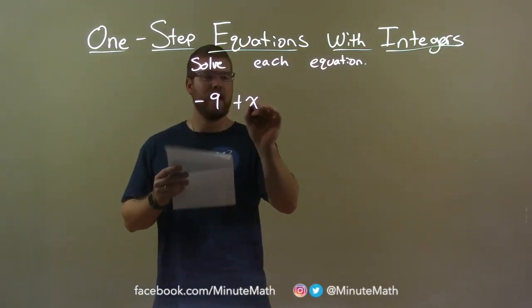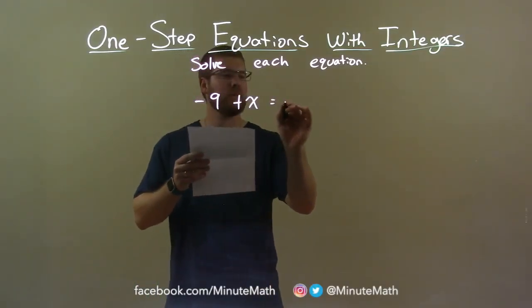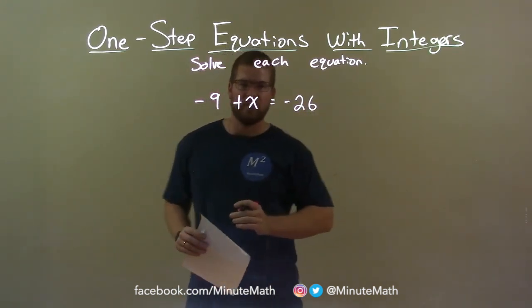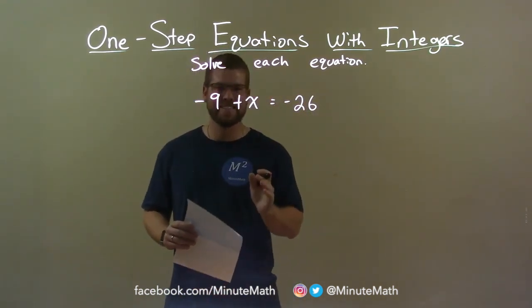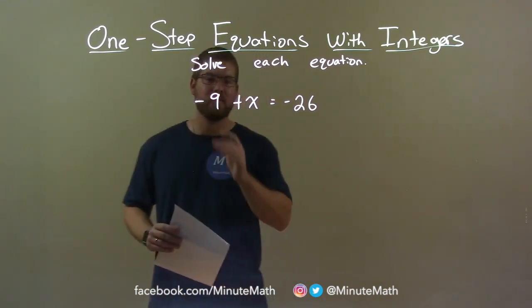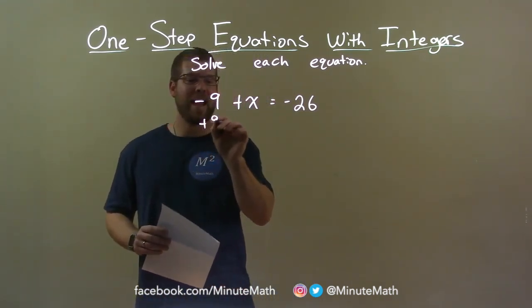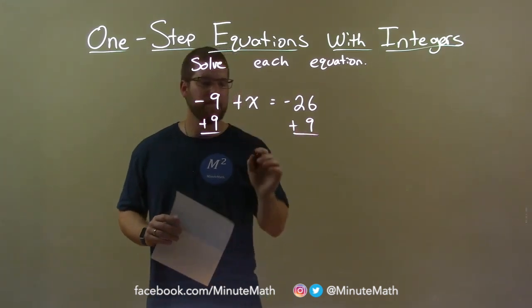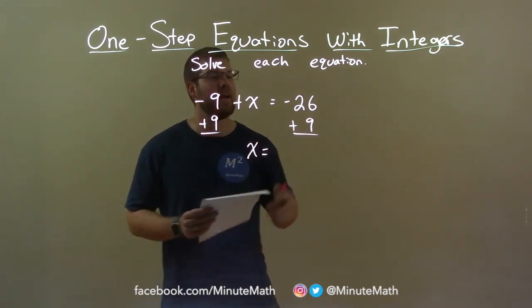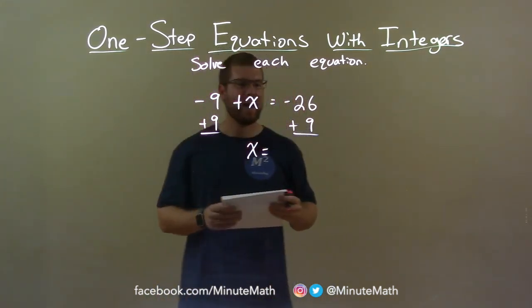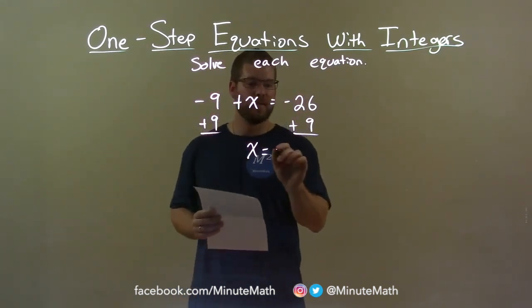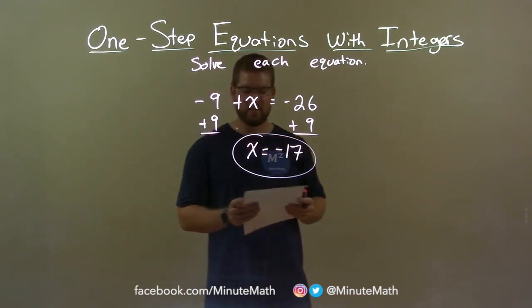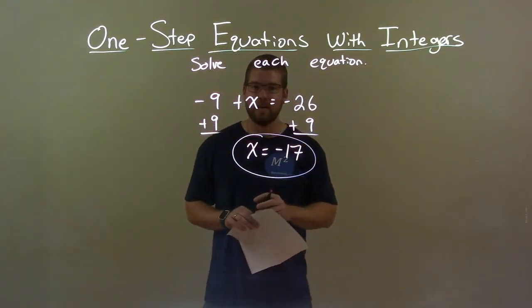Negative 9 plus x equals negative 26. I want to get x by itself, but there's a negative 9 there. To get rid of the negative 9, I have to add 9 to both sides. I have x now by itself, but I have negative 26 plus 9. Negative 26 plus 9 is negative 17. So our final answer here is x equals negative 17.